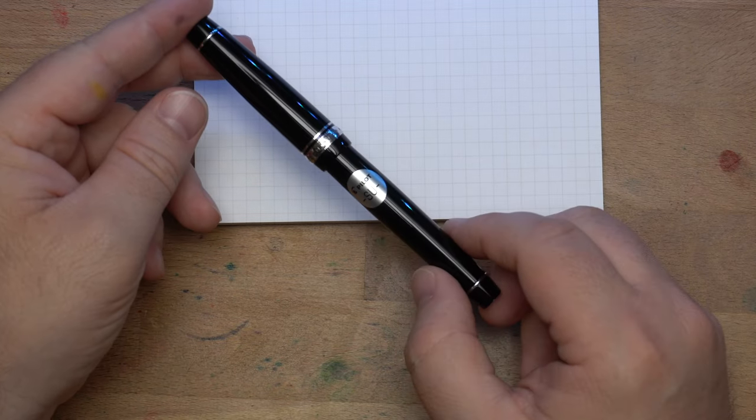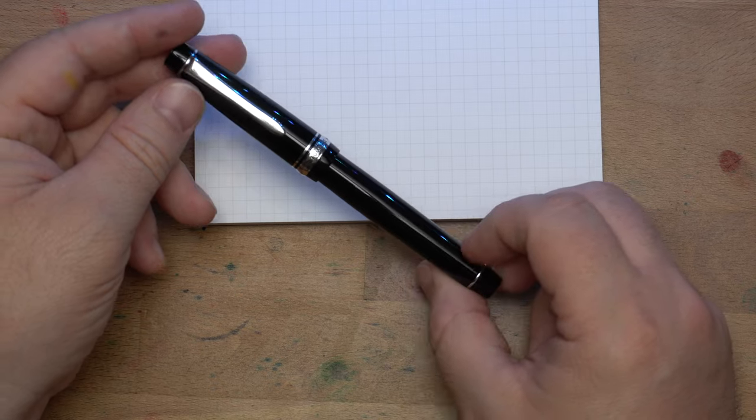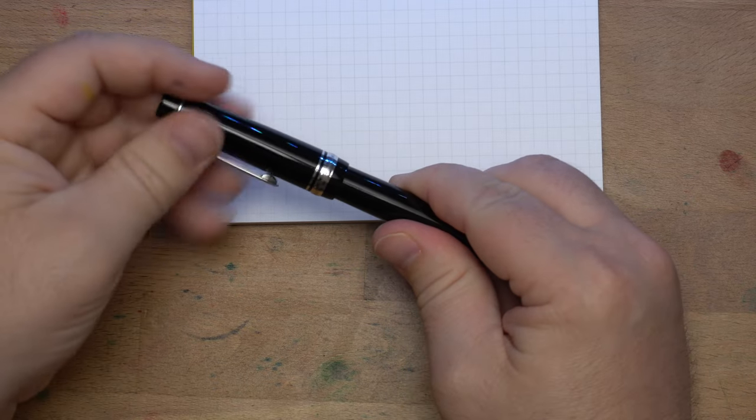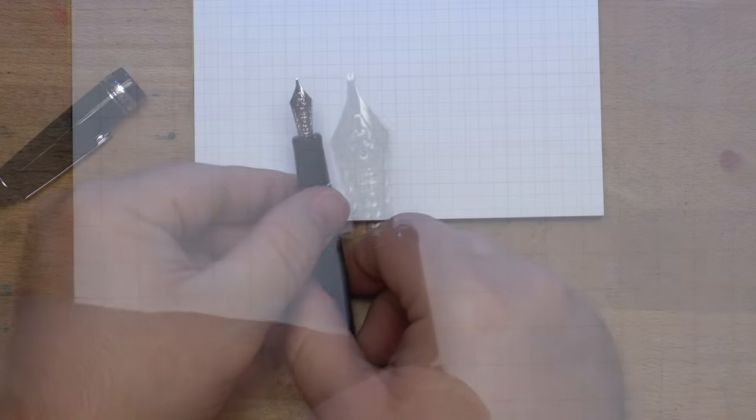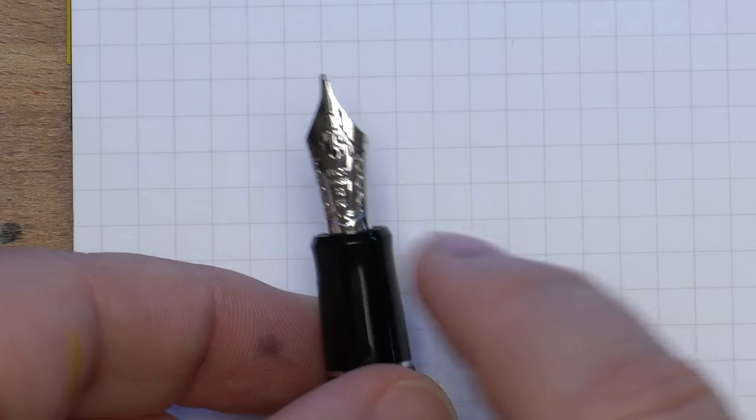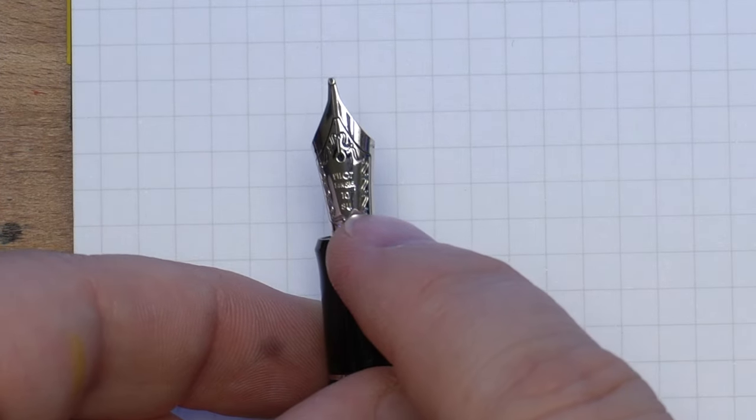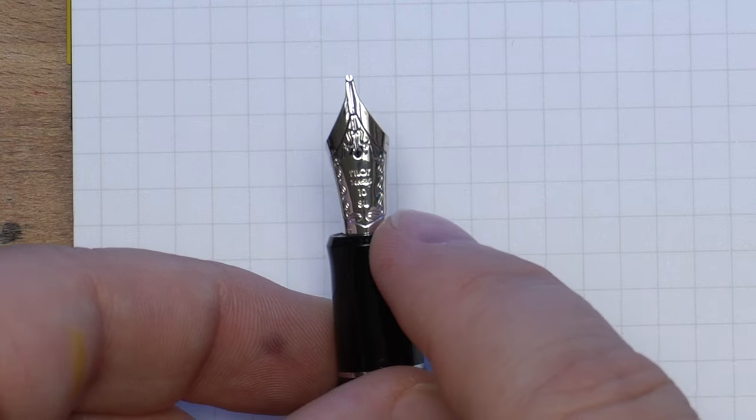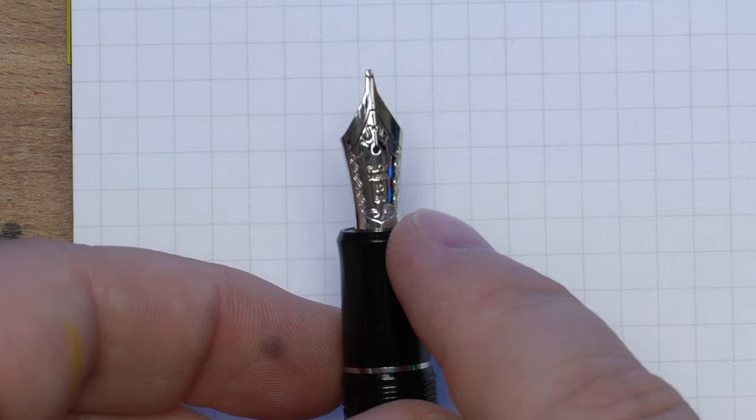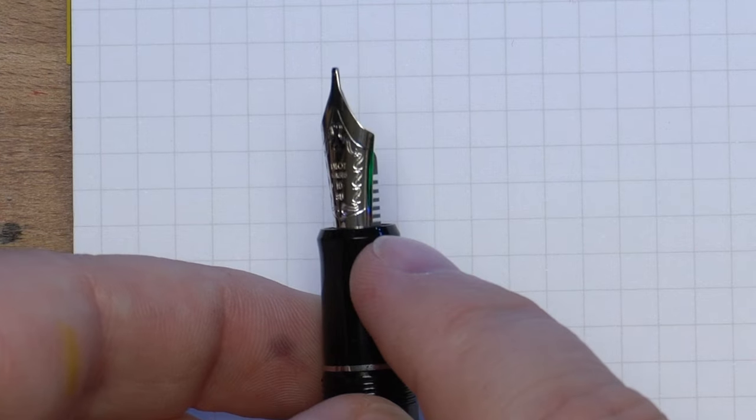Here we're looking at the stub itself, and the SU nib is a little bit on the sharp side for a stub. You can see here on the nib that we have SU as the marking, the 10 for the nib size, and the markings that say it is a 14-carat nib, and it's also rhodium-plated.